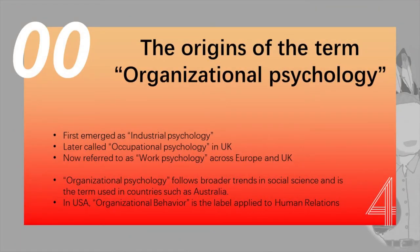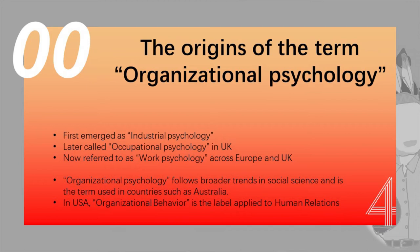First, we need to align on the term organizational psychology, as the practice has different names and meanings globally. First emerging as industrial psychology prior to the beginning of the 20th century, the practice is now known as work psychology in Europe and the UK — previously called occupational psychology in the UK in the early 1900s. Organizational psychology has emerged following broader trends in social sciences with less focus on the individual. In America there's the term organizational behavior, the label applied to the area of human relations. Our aim in this sprint is to provide an overview of how psychology is being applied to study individuals at work.